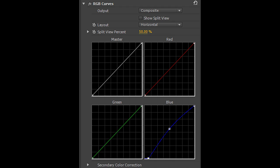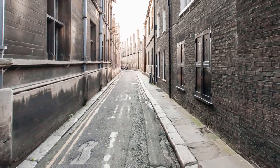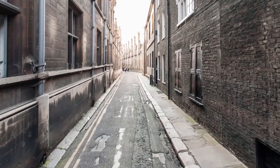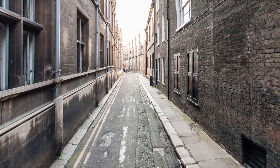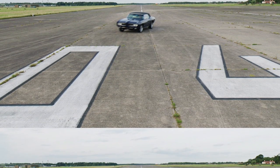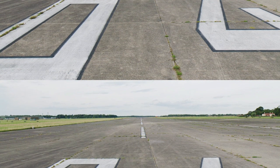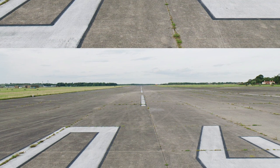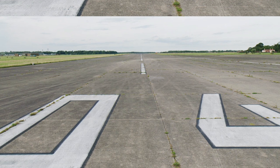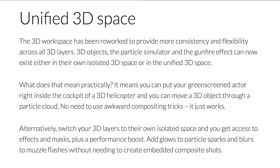Also, curves. Camera projection is being added, which is the ability to take a 2D picture and map it onto 3D planes. Object removal is now super easy by projecting a clean reference frame onto a 3D plane and having it move with the camera, erasing any unwanted objects in your scene. A unified 3D space gives you the ability to have a 3D effect isolated or together with others, meaning you can now add effects like glow to particles without needing to create another composite shot.